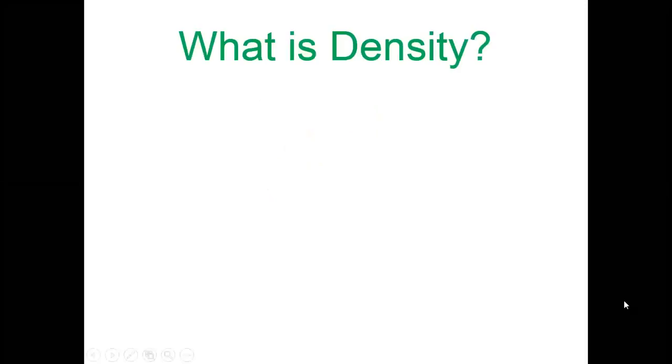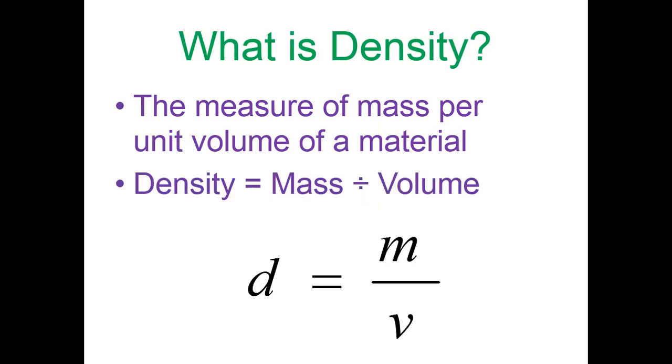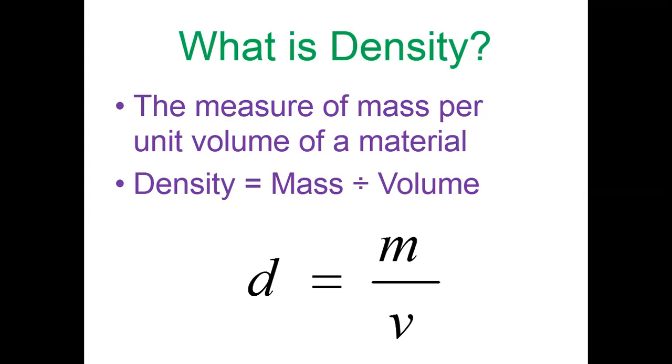We are going to look at density. If we start by defining density, it is the measure of the mass per unit volume of the material. So this means we have to involve the mass of the material and also the volume of the material. It is given by the formula: density is mass divided by volume. Mathematically, it is written as D equals M divided by V, where D is the density, M is the mass, and V is the volume of a material.